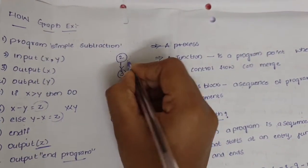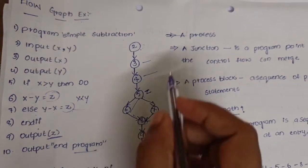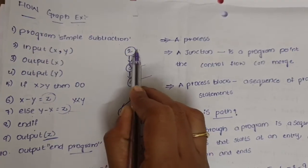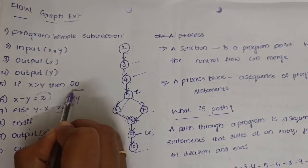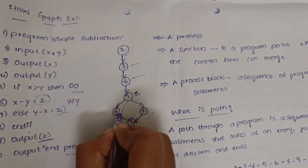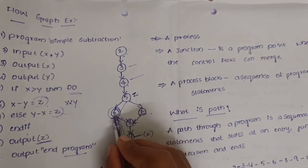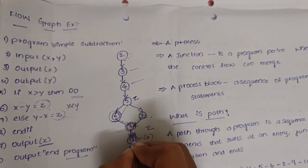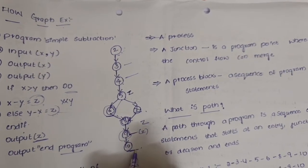In the subtraction program, the two inputs x and y are stored. Then output x and output y. If x is greater than y, then x minus y equals z — this is the sixth step. The seventh step is y minus x equals z. Both are merged into z, which is the end-if. The output is stored in the ninth step, then the program ends.